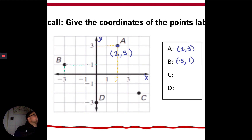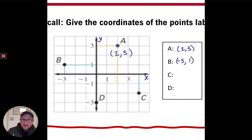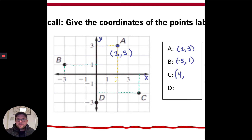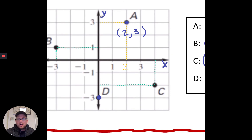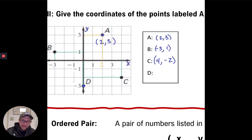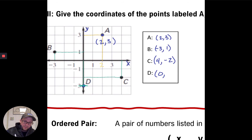Repeating the same process for point C: the x value is 1 past 3, so that's 4, and the y value comes in at negative 2, making point C (4, negative 2). Point D is unique because it's located on the y axis. When I trace up to the x axis, it lands at 0. The y coordinate is self-explanatory since you're right on it — y equals negative 3. So the coordinate for D is (0, negative 3).